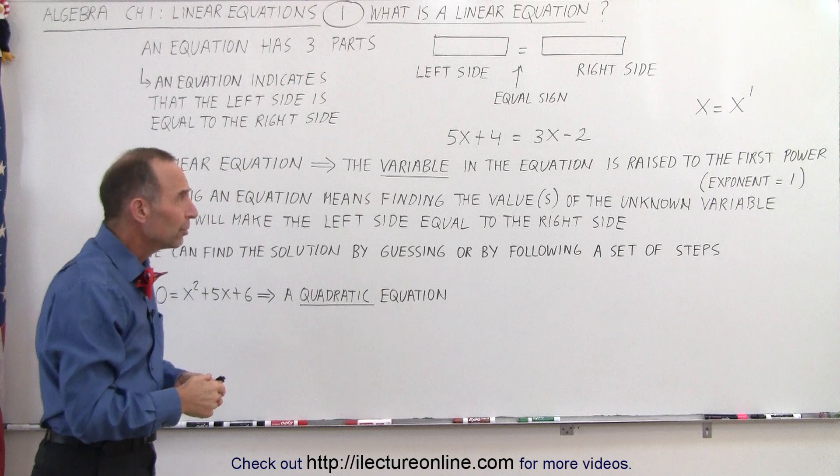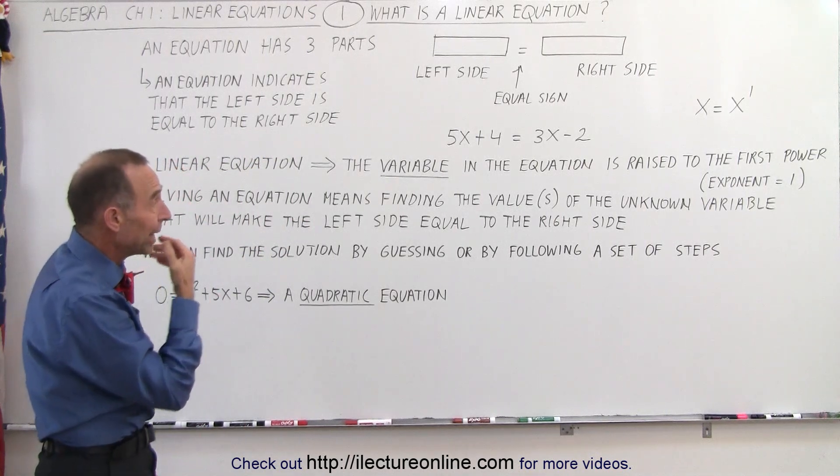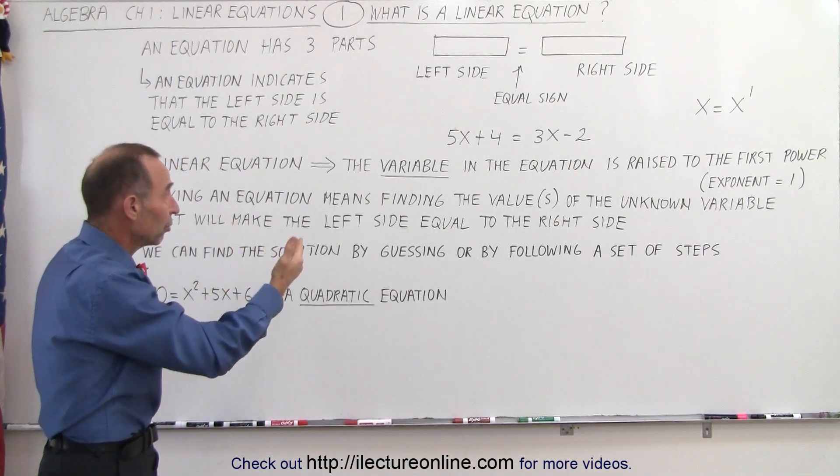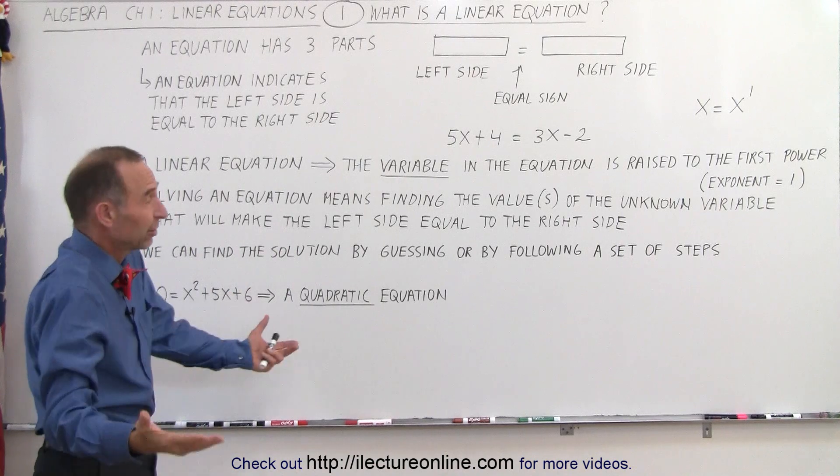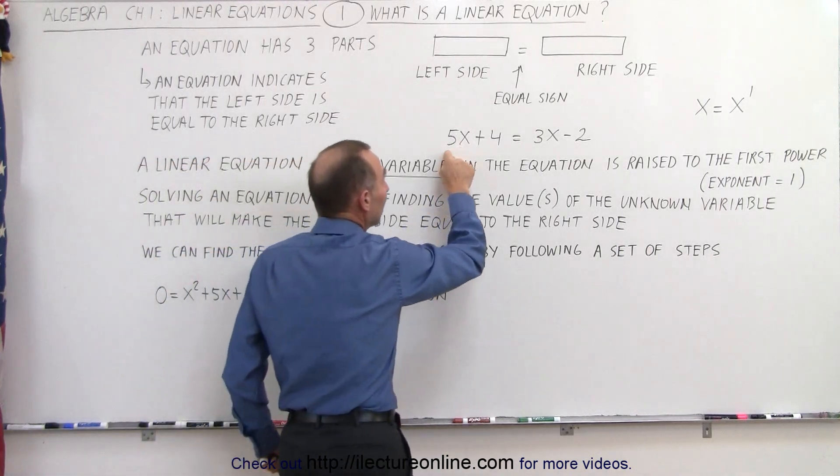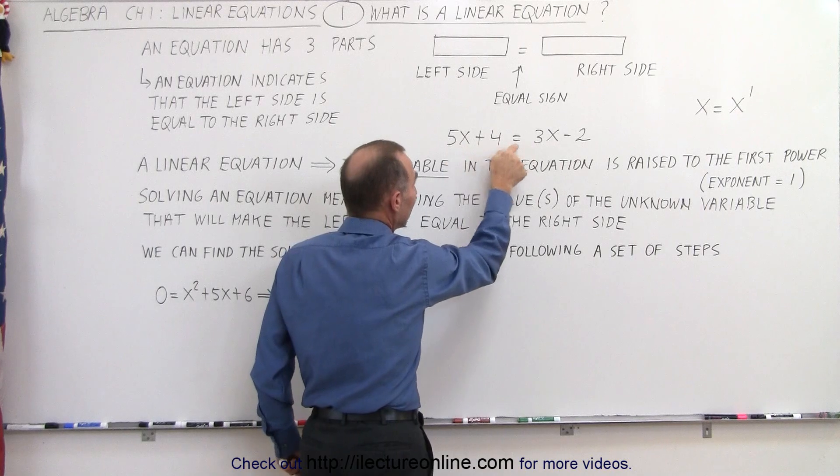How do we do that? Well, you can guess. You can say, well, maybe x is equal to 1, x is equal to 2, x is equal to 3, x is equal to 0. You plug that value in for x, and then you work it out to see if the left side indeed equals the right side.